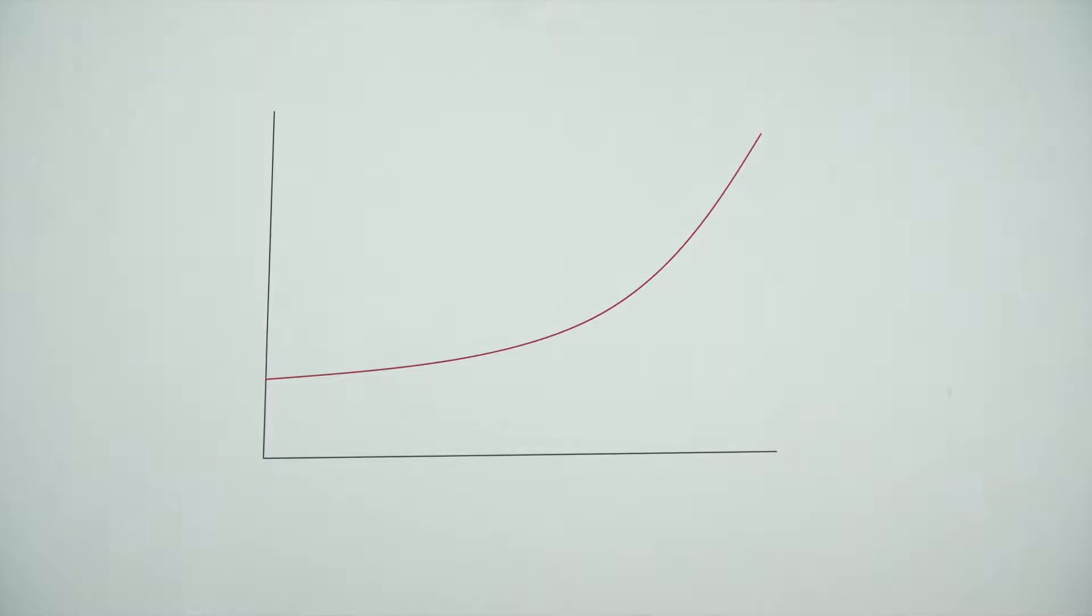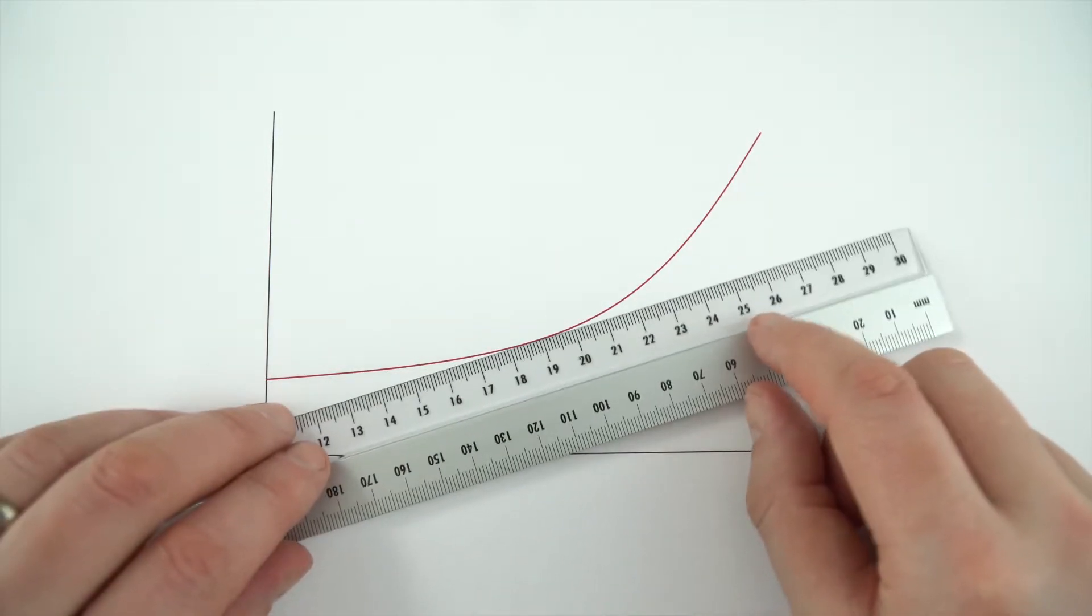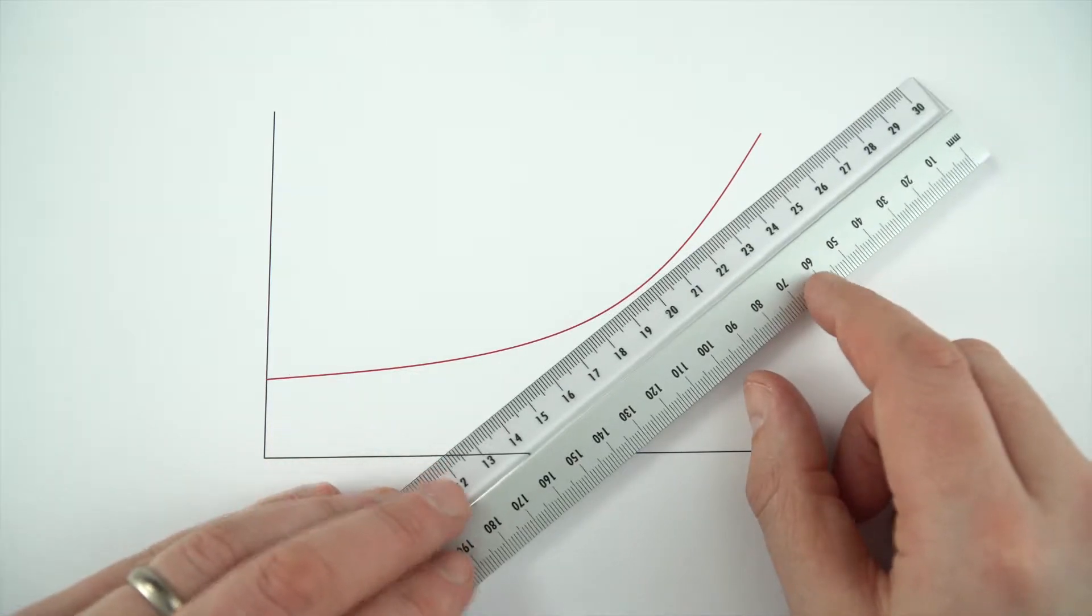So what's the gradient of this line? Well, it really depends where you measure it. Because what we can see is depending on where we look at this line, the gradient is increasing all the time.